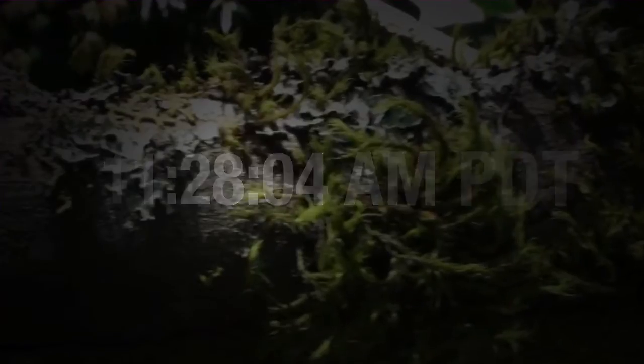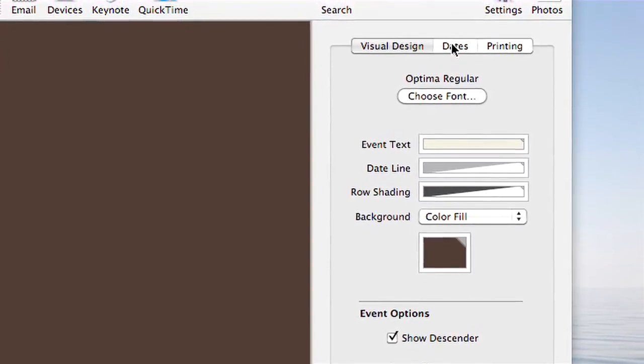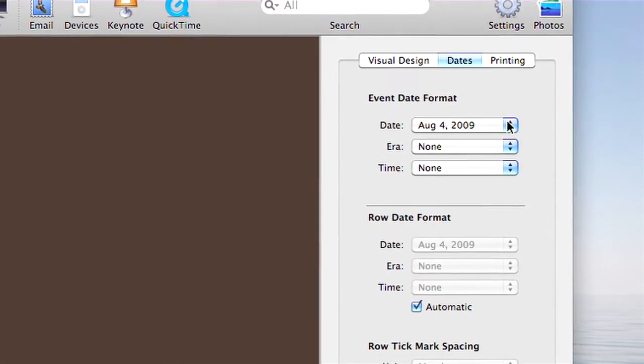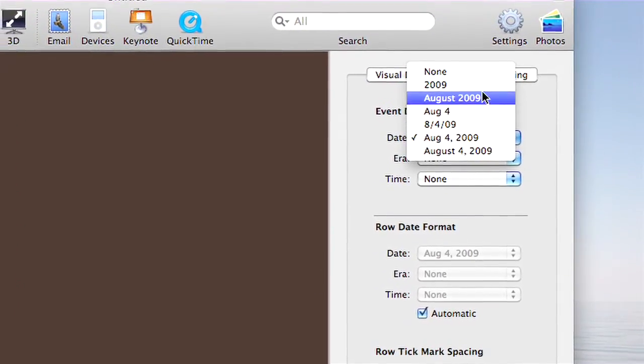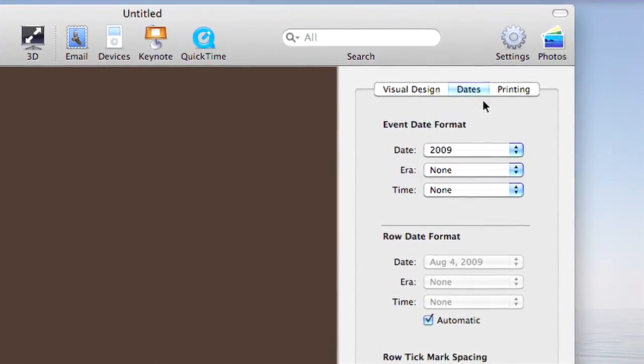BDocs Timeline 3D supports many different date formats, including BC and International dates. You can also select a time for your event, even down to the second the event occurred. The events in this particular timeline will only show the year the item was invented, so I'm going to select the Dates tab in the Settings panel and choose a date format that only displays the year.